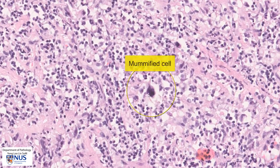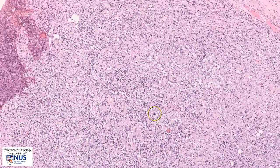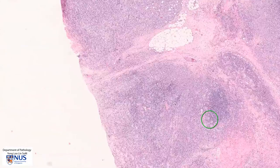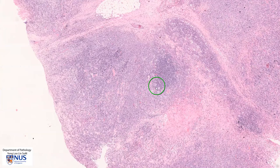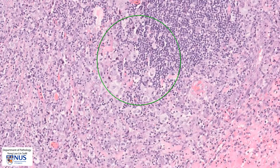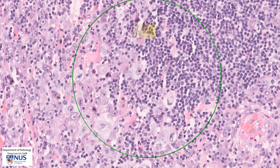Here is a mummified cell with a very degenerate, smudgy appearing nucleus and the whole cell appears somewhat shrunken. Over here, even at this magnification, we can see that there are some pale areas. Zooming in, this is an example of a lacuna cell where you can see the large Reed-Sternberg cell sitting within an empty space.